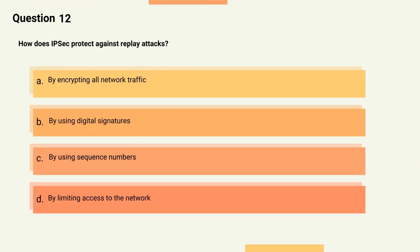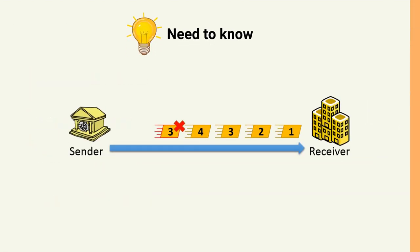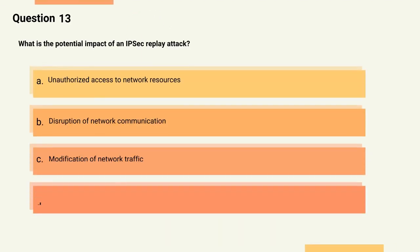Question 12: How does IPSec protect against replay attacks? Options: A) By encrypting all network traffic, B) By using digital signatures, C) By using sequence numbers, D) By limiting access to the network. The correct answer is Option C, by using sequence numbers. Explanation: IPSec uses sequence numbers to prevent replay attacks. Sequence numbers are assigned to packets and checked by the receiver to ensure they are in the correct order and that no packets have been duplicated or delayed.